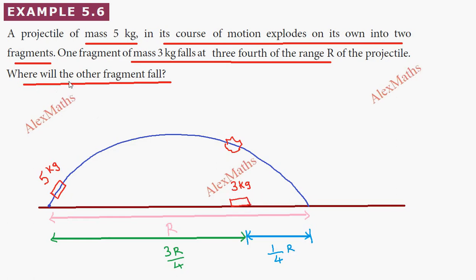Where will the other fragment fall? The other fragment — suppose it lands at some distance beyond R. The last two fragments consist of the 2 kg piece. So this fragment has mass 2 kg.